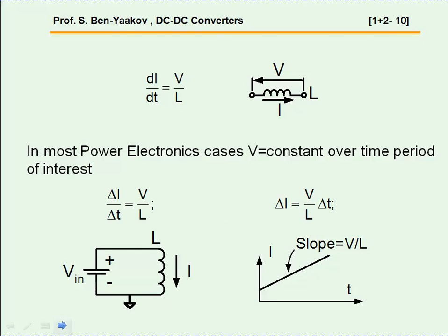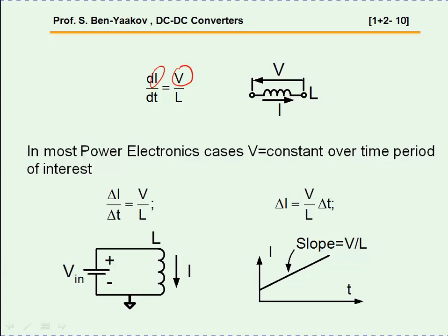Let's start with the inductor. The basic equation that relates the voltage and the current of an inductor is derived from the state space equation. It says that the rate of rise of the current, in amps per second, is equal to the voltage imposed on it over the inductance — voltage in volts and inductance in henry.